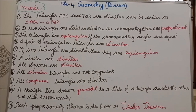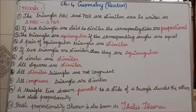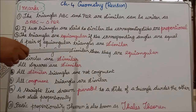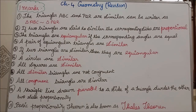Fourth one: a pair of equiangular triangles are similar. Equiangular triangles come under the similar link. Fifth one: if two triangles are similar, then they are equiangular. We have said the corresponding sides are equal — if the corresponding sides are equal, then it is similar. So, if two triangles are similar, then they are equiangular.